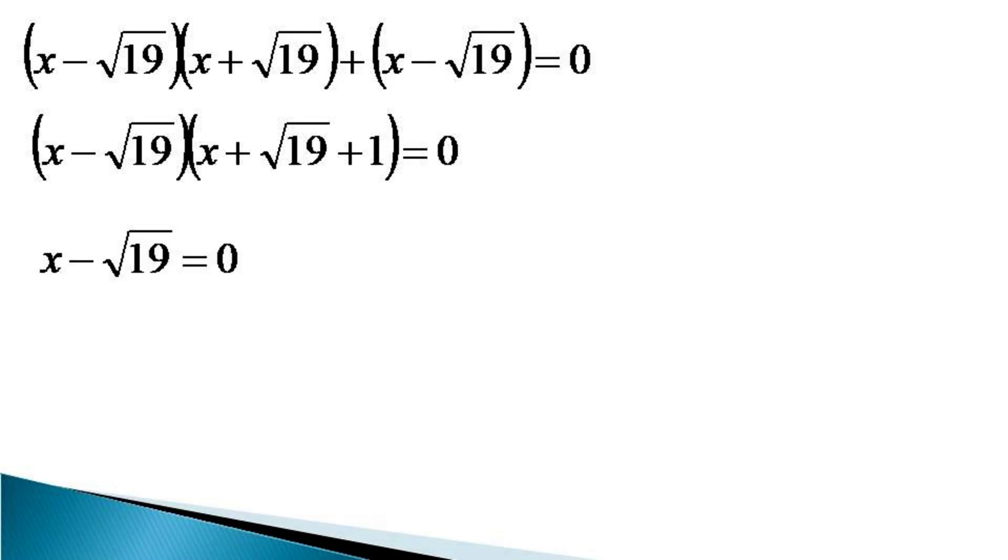From here either x minus root 19 is equal to 0 which gives us the value of x as equal to root 19 which was our obvious solution or we get x plus root 19 plus 1 being equal to 0.